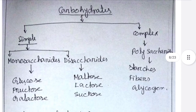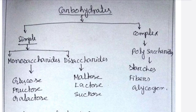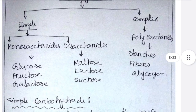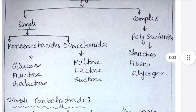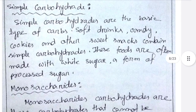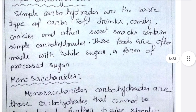Carbohydrates are of two types: simple and complex. Simple carbohydrates are also of two types: monosaccharides and disaccharides. Monosaccharides are divided into glucose, fructose, and galactose. Disaccharides are divided into maltose, lactose, and sucrose. Complex carbohydrates are divided into polysaccharides, which include starch, fibers, and glycogen. Simple carbohydrates are the basic type of carbs; soft drinks, candy, cookies, and other sweet snacks contain simple carbohydrates.